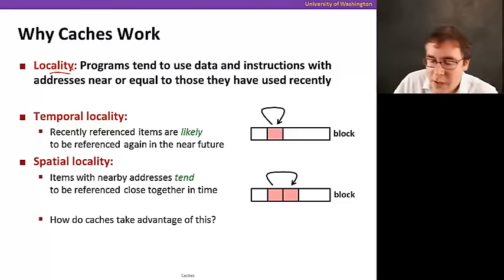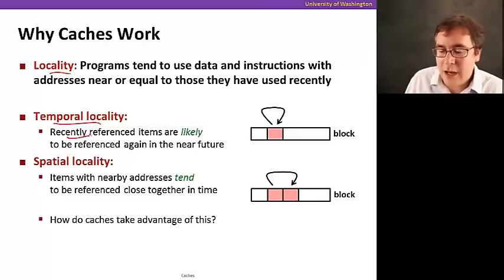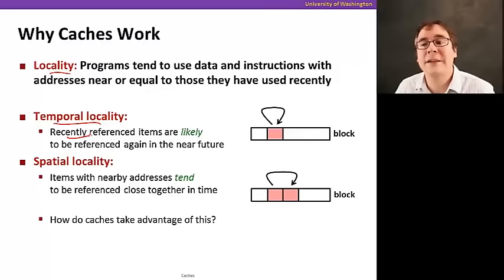So we have two types of locality. One is called temporal locality that says that data items that were referenced recently are likely to be referenced again in the near future. So if you've got a given data in a block here, a given piece of data that is accessed by your program, you tend to access it over and over again in time.